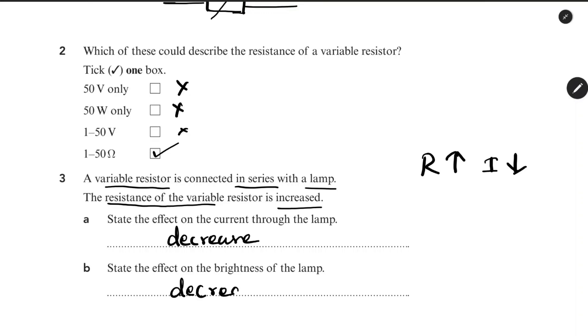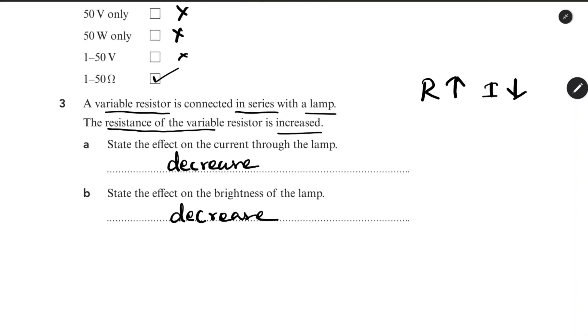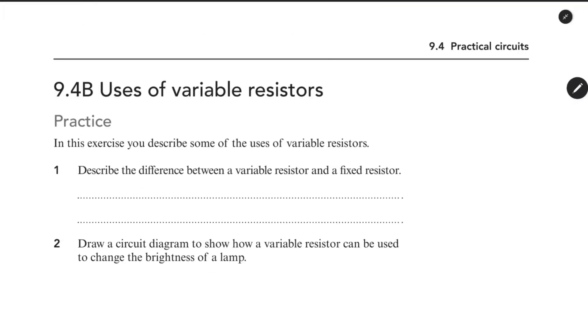State the effect on the brightness of the lamp. It also decreases. The current is reduced, so the brightness of the lamp is reduced.